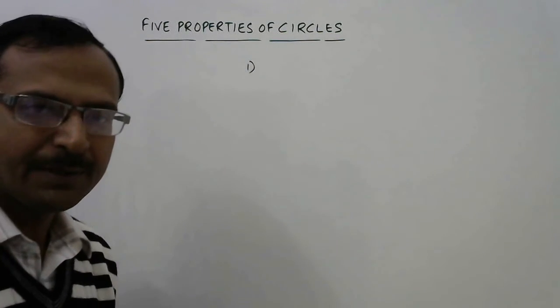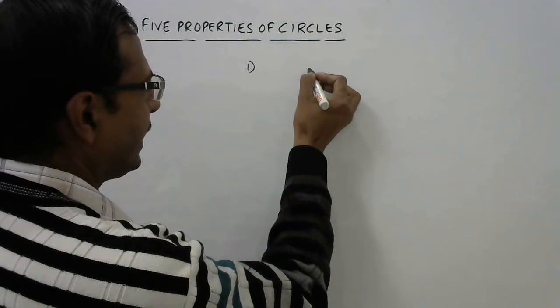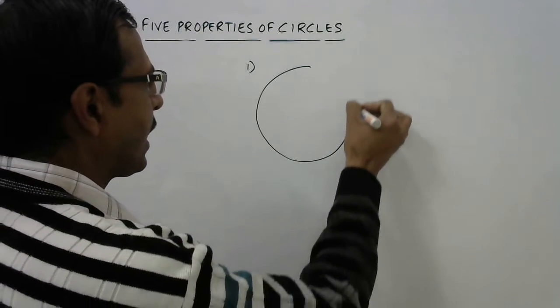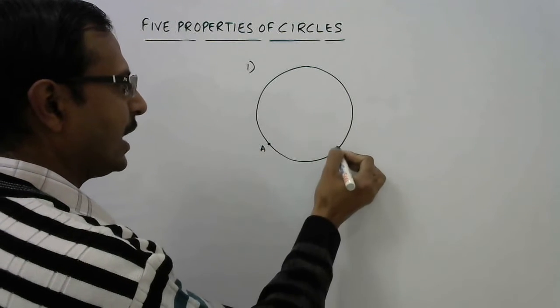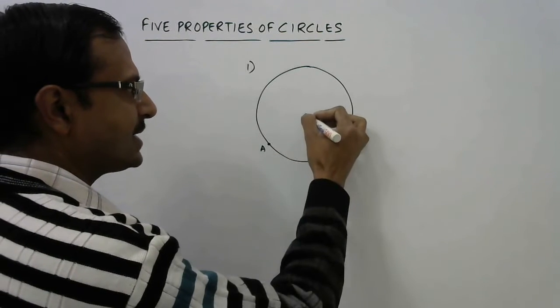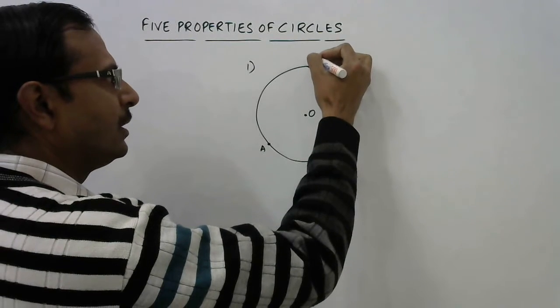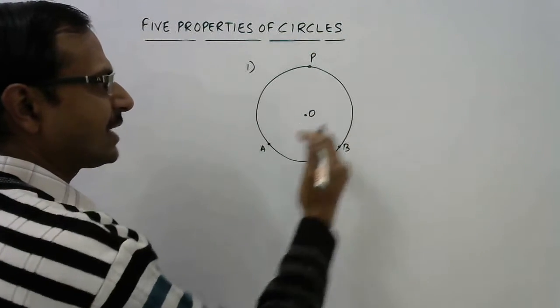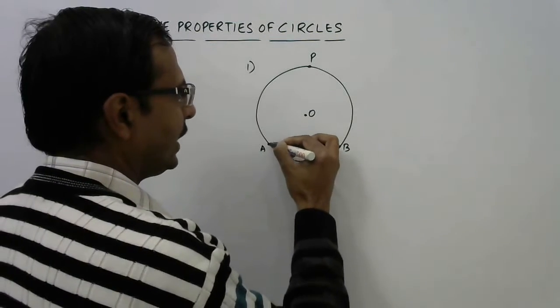In the first property I am taking a circle and I will draw an arc. This is the arc ADB, and this is the center of circle O.